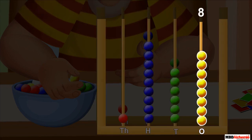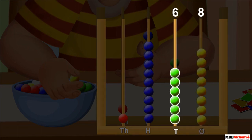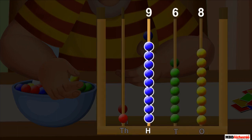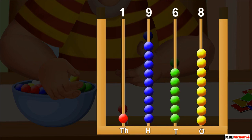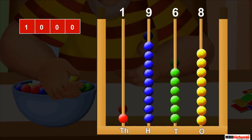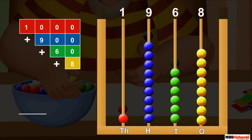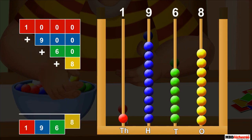The abacus now has eight beads in the ones spike, six beads in the tens spike, nine beads in the hundreds spike, and one bead in the thousands spike. So we can say that the number represented by Sid on the abacus is 1,000 plus 900 plus 60 plus 8, which is equal to 1,968.